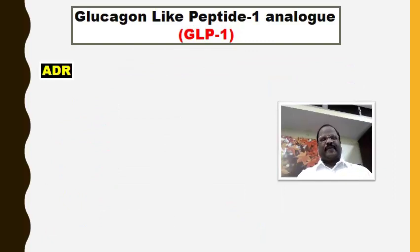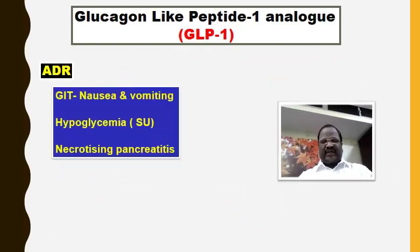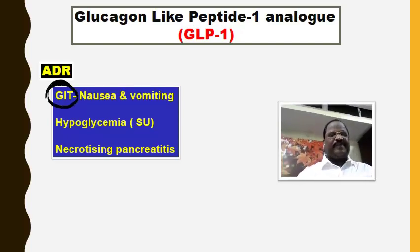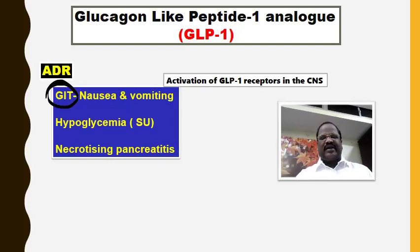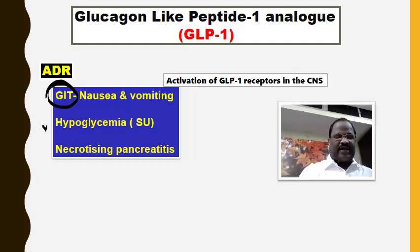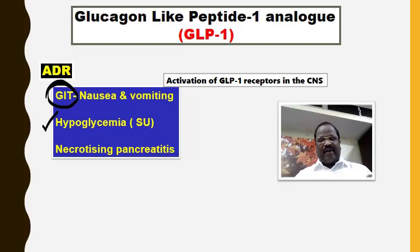Now moving to adverse drug reactions of GLP-1 analogs. The most important adverse effect is nausea and vomiting. GLP-1 receptors are present in many areas including the CNS, and activating them there causes nausea and vomiting. Since GLP-1 analogs cause insulin release, there is a risk of hypoglycemia — especially when used with sulfonylureas. All GLP-1 analogs carry a risk of pancreatitis.